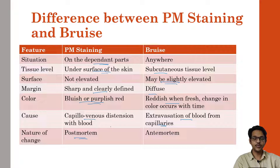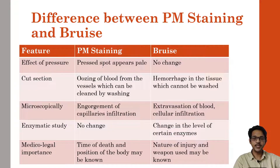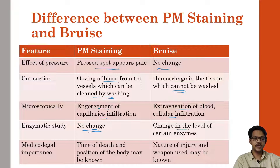Post-mortem staining occurs after death; bruises are mainly ante-mortem. When pressure is applied, post-mortem staining appears pale, but there is no change in bruises. On cut section, blood oozes from the cut section of staining and can be cleaned by washing. In bruises, the blood is present in the tissue, gets clotted and cannot be washed away. Microscopically, post-mortem staining shows engorgement of capillaries; bruises show extravasation of blood and cellular infiltration. Enzymatically, there is no change in staining, while changes in the level of certain enzymes are seen in bruises.